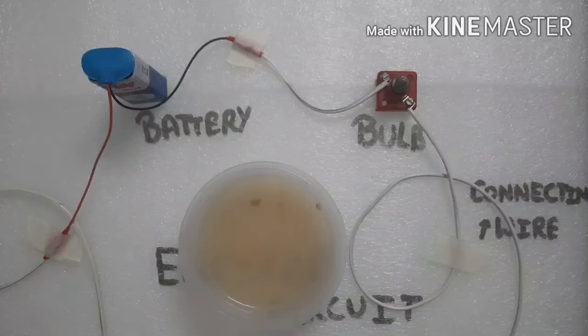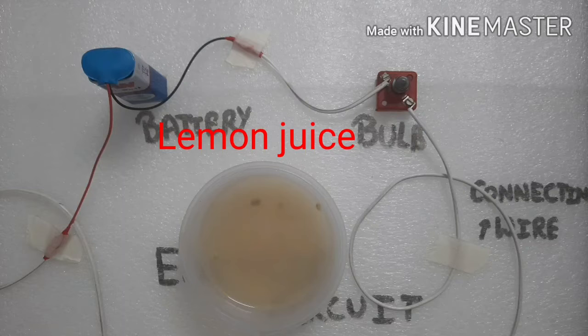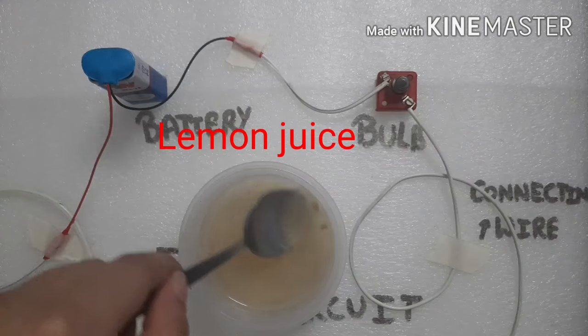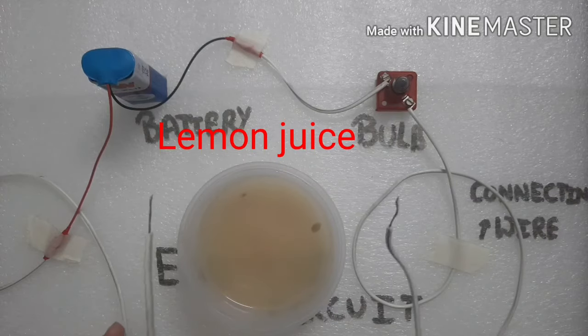Okay children, so my first sample is lemon juice. I have taken a little amount of water in the plastic container and squeezed two lemons into it. Now before putting the free ends of the wire, I will just mix the mixture once again. And then I will put my two free ends of the connecting wire into the liquid.